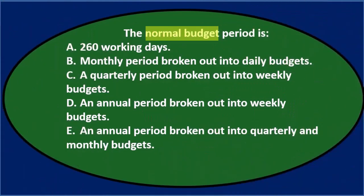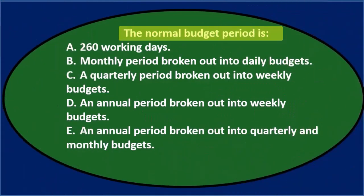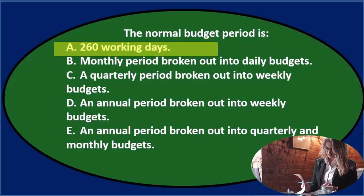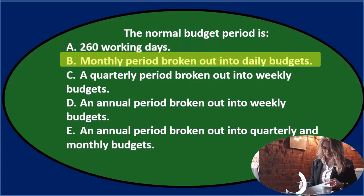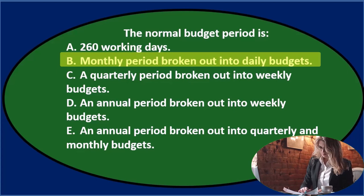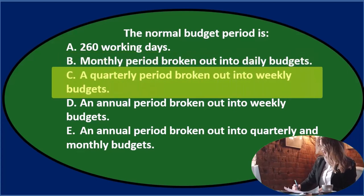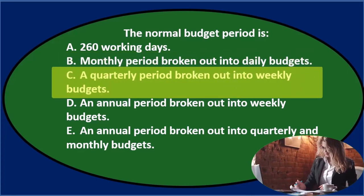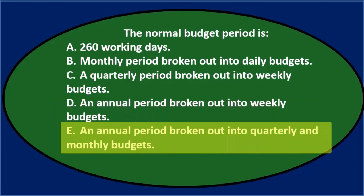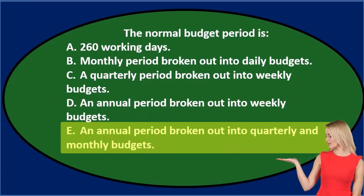First question: the normal budget period is A. 260 working days, B. a monthly period broken out into daily budgets, C. a quarterly period broken out into weekly budgets, D. an annual period broken out into weekly budgets, and E. an annual period broken out into quarterly and monthly budgets.